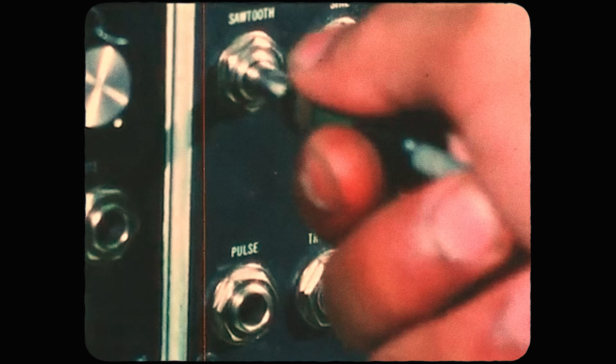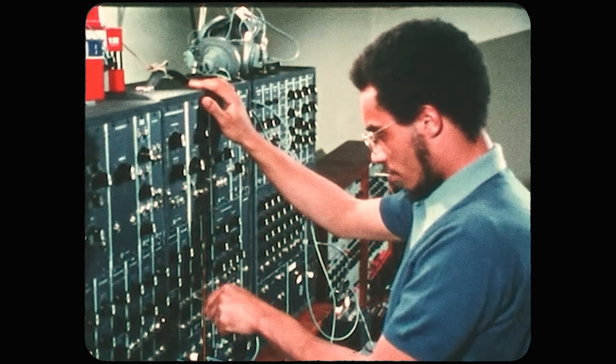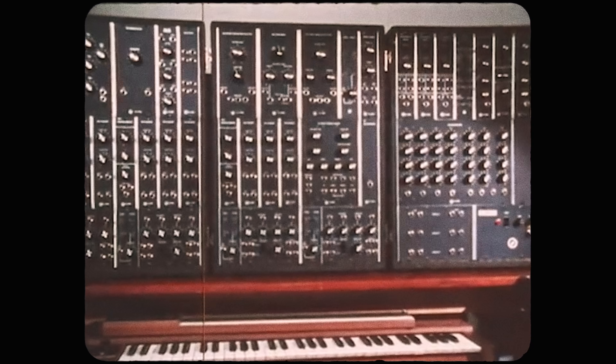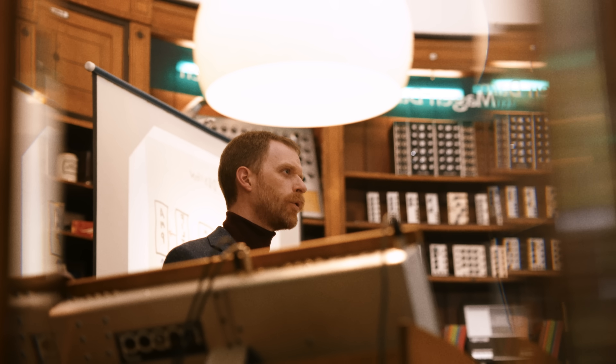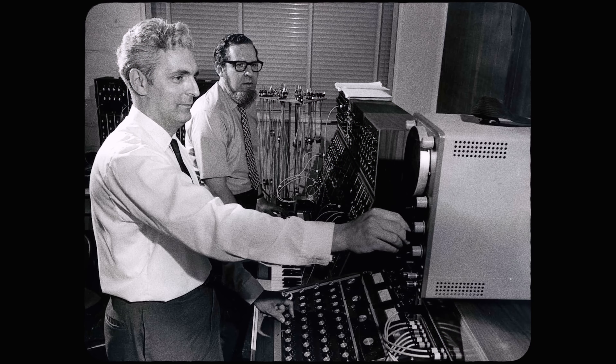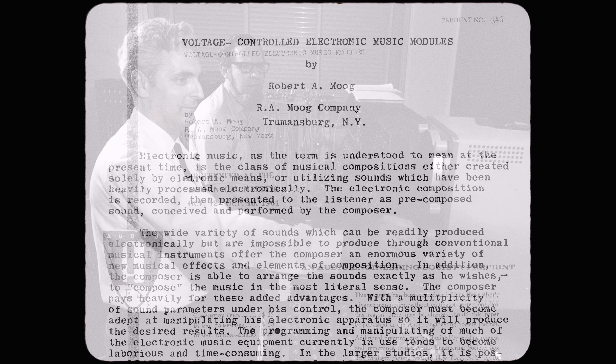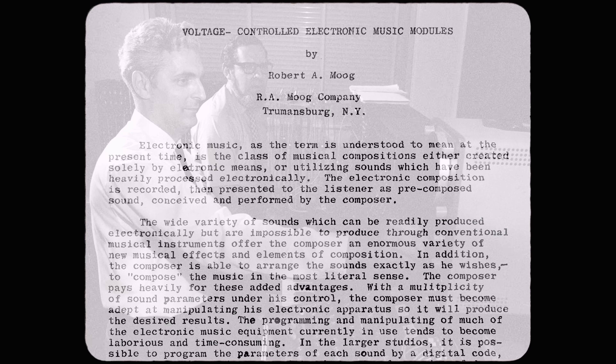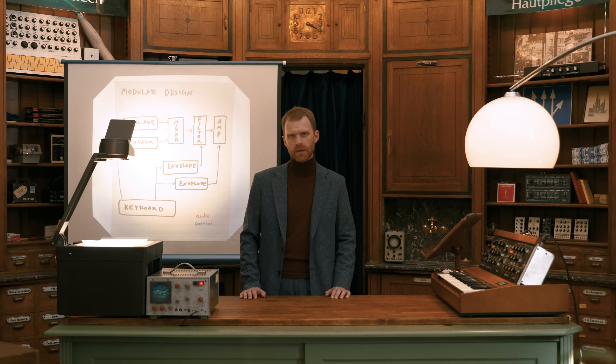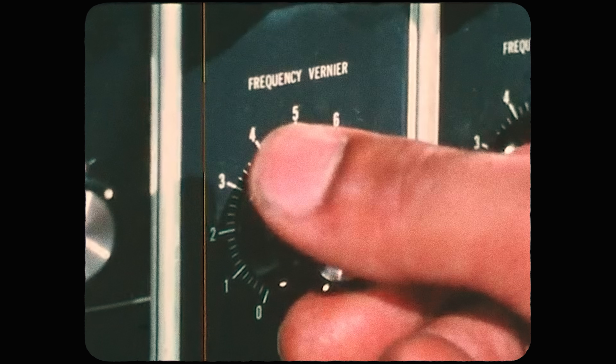Each configuration was called a patch and effectively created a new instrument. This modular design was pushed even further by Bob and composer Herb Deutsch's invention of voltage control, which was presented in the 1964 AES paper Voltage Controlled Electronic Music Modules. Their insight was to use voltage to control parameters of these different modules, say the frequency of an oscillator or the volume of an amplifier, which allowed you to play them musically.